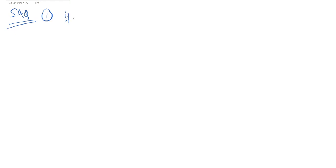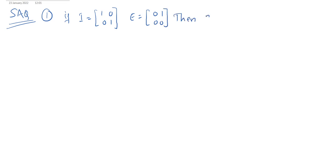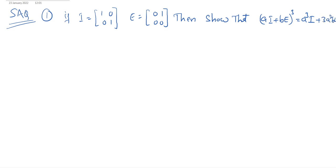SAQs — short answer type questions. First one: if I is equal to [1, 0; 0, 1] and E is equal to [0, 1; 0, 0], then show that (aI + bE)³ = a³I + 3a²bE.